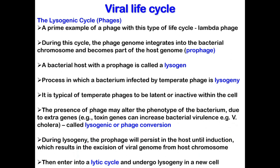Temperate phages are able to undergo lysogeny, and a prime example is lambda phage. During the lysogenic cycle, the phage genome integrates into the bacterial chromosome and becomes part of the host genome. The integrated phage genome is called a prophage, and a bacterial host carrying a prophage is called a lysogen. It is typical of temperate phages to be latent or inactive within the cell. The presence of the phage may alter the phenotype of the bacteria — for example, toxin genes can increase bacterial virulence, a process called lysogenic or phage conversion.